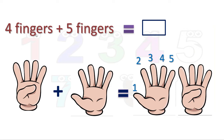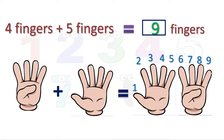Now here we are going to add four more fingers. So what we will do? We will count in forward direction for the four fingers. After five comes six, seven, eight, nine. All together there are nine fingers. What we did? We counted in forward direction to get our answer.